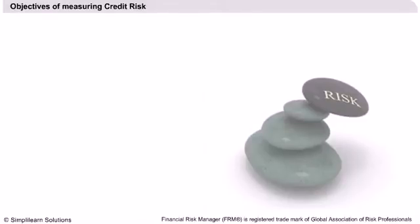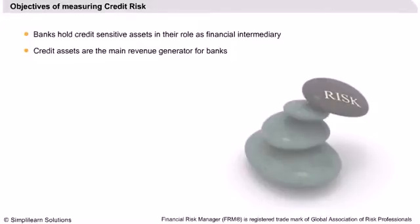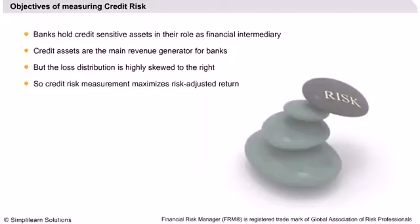In their role as financial intermediaries, banks hold credit sensitive assets. Although these assets are the main revenue generator for banks, they have a positive probability of default. However, the distribution of losses is highly skewed. So banks should have a keen awareness of the need to identify, measure, monitor, and control credit risk, as well as to determine that they hold adequate capital against these risks. This would maximize risk-adjusted return.